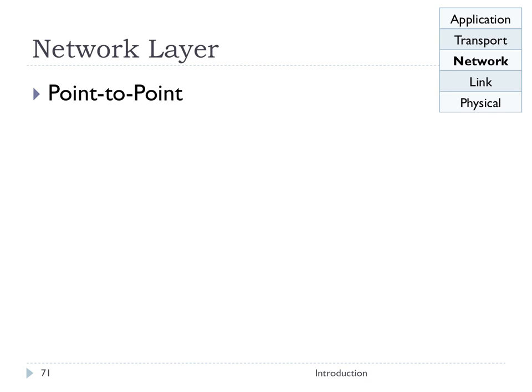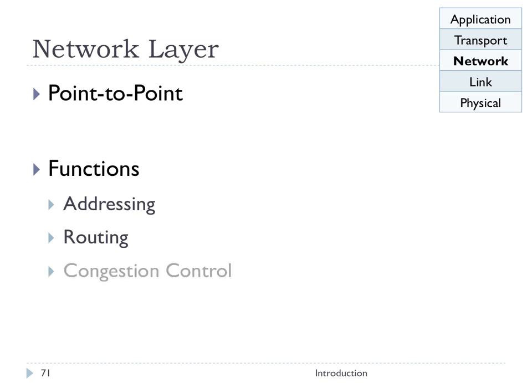The network layer is a point-to-point protocol. It provides addressing at the network layer so that every host has a network address — what we think of as an IP address. It provides routing functionality to route data over multiple hops by sending it to the appropriate routers. It may or may not also provide congestion control and administration functionality to manage routers.